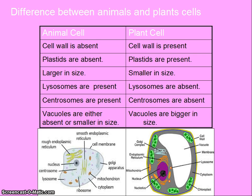Difference between an animal and plant cell. Animal cells are without a cell wall while plant cells have a cell wall. Plastids are absent in animal cells while they are present in plant cells. Animal cells are larger in size while plant cells are smaller in size. Lysosomes are present in animal cells while they are absent in plant cells. Centrosomes are present in animal cells but absent in plant cells. Vacuoles are either small or absent in animal cells while vacuoles are bigger in size in plant cells.